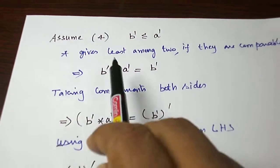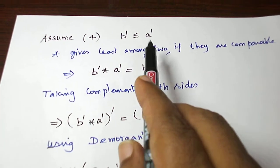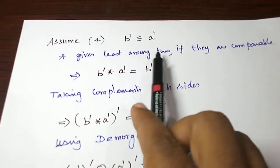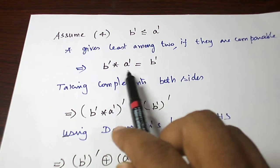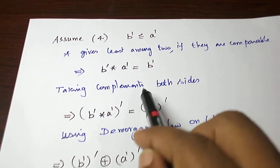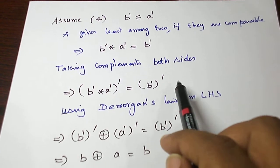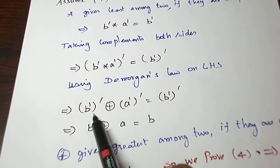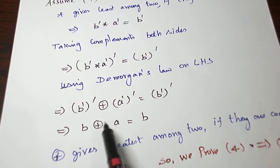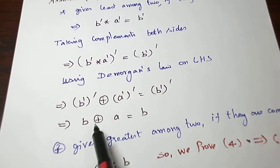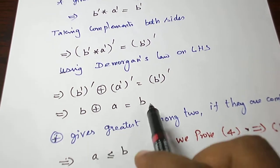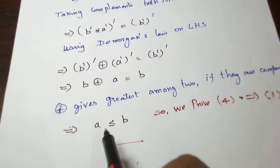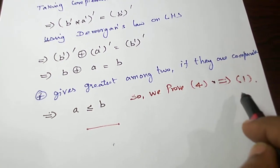Now assume statement 4: B dash is less than or equal to A dash. Since star gives the smaller of two comparable elements and B dash is smaller, taking the star we get B dash star A dash equals B dash. Taking the complement of both sides and applying De Morgan's law on the left: B dash complement plus A dash complement equals B dash complement. Since B dash complement is B and A dash complement is A, we get B plus A equals B. Since plus gives the greater among comparable elements, B is greater and A is smaller. So we have A less than or equal to B, proving 4 implies 1.